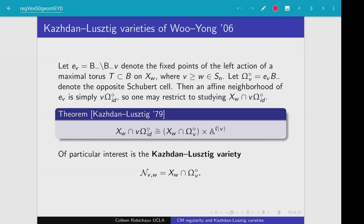We know that any point on our Schubert variety is going to be in the Borel orbit of one of these fixed points. So when we're studying local questions about the Schubert varieties, it makes sense to study questions about our Schubert varieties just looking at local neighborhoods of these fixed points. Using a theorem of Kazhdan-Lusztig, we know that this local neighborhood of the Schubert variety near one of these fixed points is actually isomorphic to the Schubert variety intersected with an opposite Schubert cell.